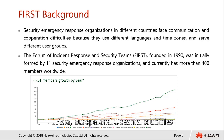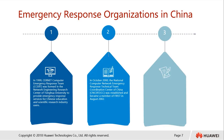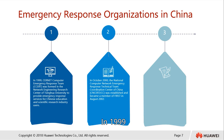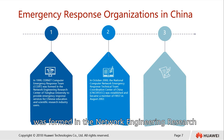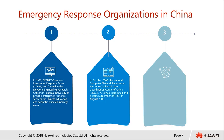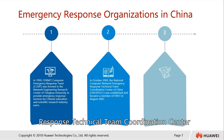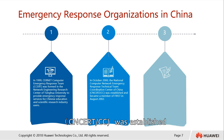FIRST has members across Africa, the Americas, Asia, Europe, and Oceania regions. In China, the emergency response organizations are closely related to what we discussed. In 1999, the Computer Emergency Response Team was formed in the Network Engineering Research Center of Xinhua University, solely for the Chinese education and scientific research industry. In 2000, the National Computer Network Emergency Response Technical Team Coordination Center of China was established, becoming a member of FIRST in 2002.